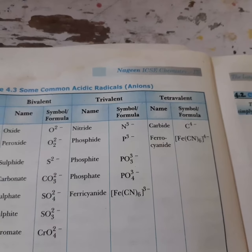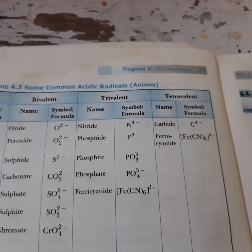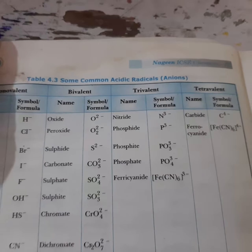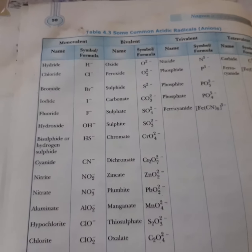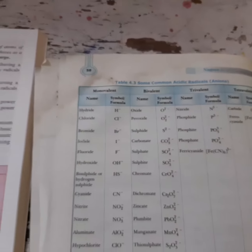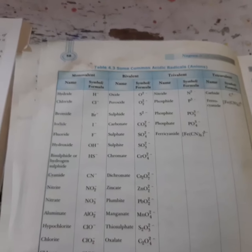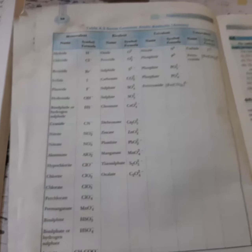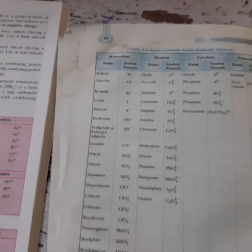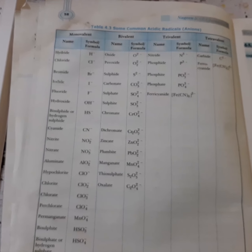We also have tetravalent anions carrying a charge of minus four, such as carbide and ferrocyanide. You need to learn all these lists of acidic and basic radicals, because during the formation of a compound, cations and anions combine together. In the next video, we will be learning about chemical formulas and how to write them.